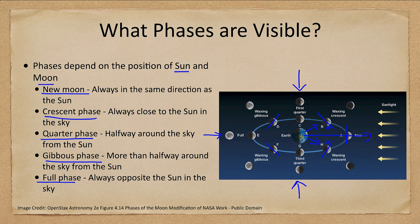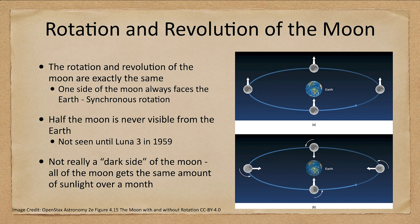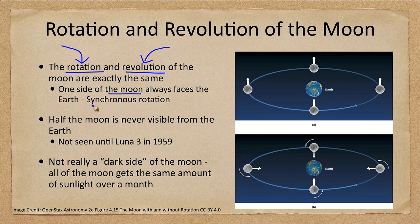Now let's look at the rotational period of the moon. The rotation and revolution of the moon are exactly the same. Rotation is how long it takes to spin on its axis, and revolution is how long it takes to go around the Earth one time. That means one side of the moon always faces the Earth, which is what we call synchronous rotation.